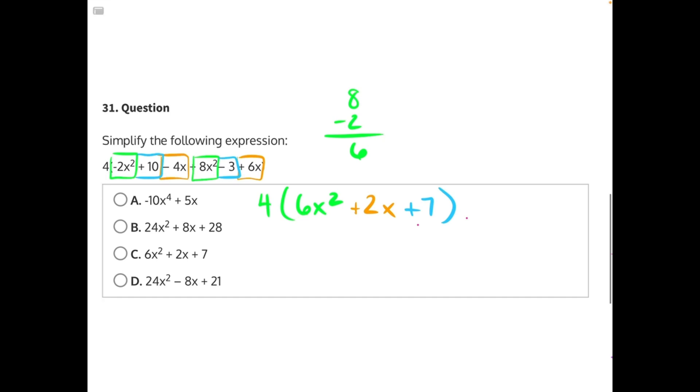So we can distribute 4 to 6x squared. 4 times 6 would give us 24x squared. At this point, you can eliminate answer choice A and answer choice C because they are not leading with 24x squared.